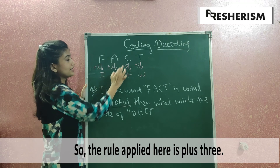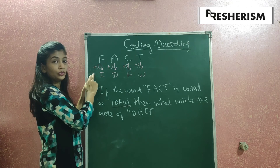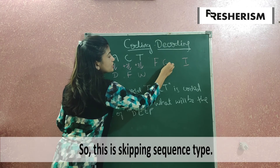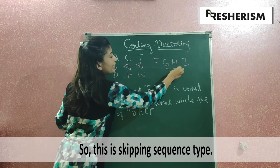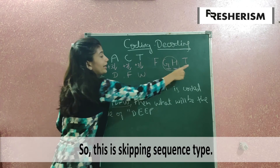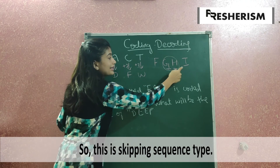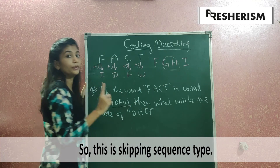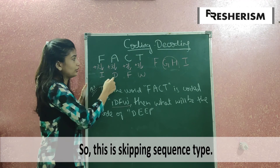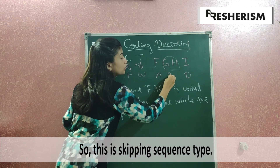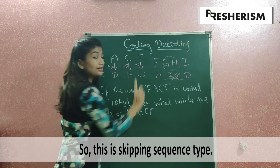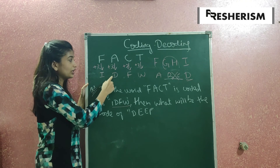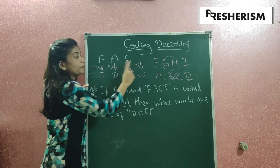This is the pattern of skipped sequence — we skip letters to form a code. From F to I, there are two letters in between (G and H) that are skipped, and we write the third letter. So F plus 3 is I, A plus 3 is D, C plus 3 is F, and T plus 3 is W. The same rule of plus 3 will be applied to find the code for 'diet'.